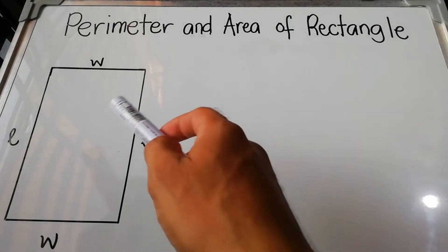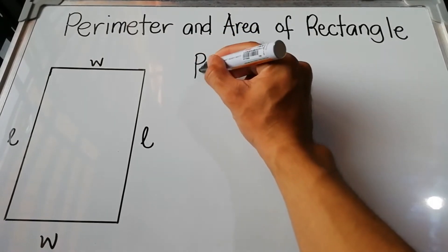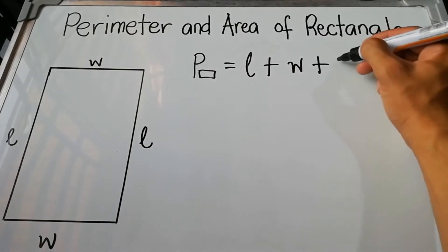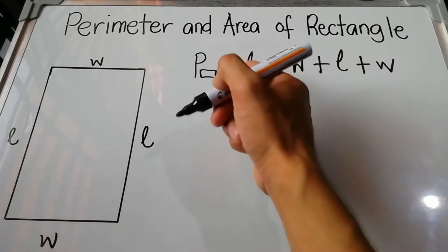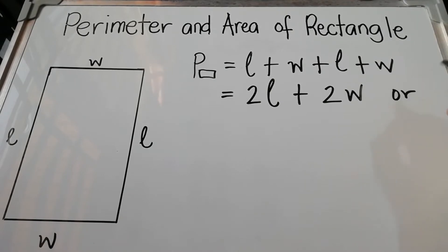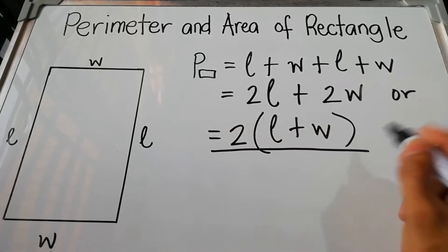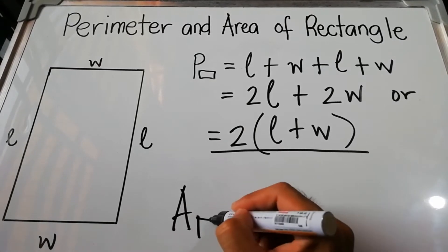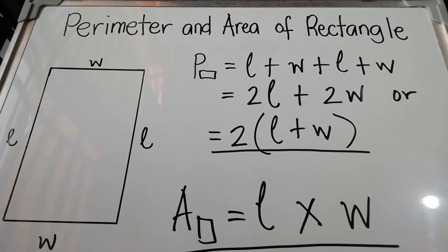Because from the definition itself, the opposite sides are congruent so their measurements are equal. For the perimeter of the rectangle, we have to find the total measurement of the sides, so we add all their measurements. The perimeter equals L + W + L + W, or simply 2 times length plus 2 times width, or the easiest way: add length and width then multiply by 2. For the area of the rectangle, simply multiply the length by the width.